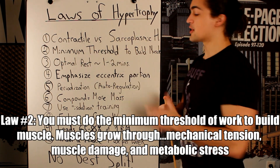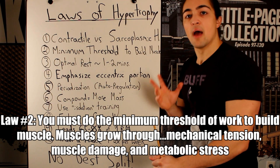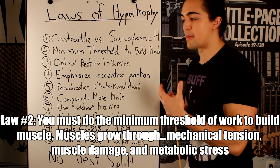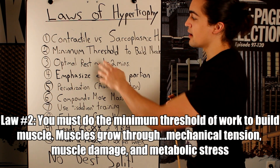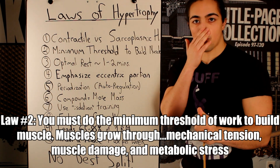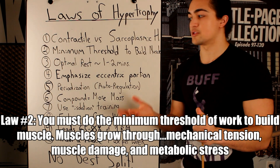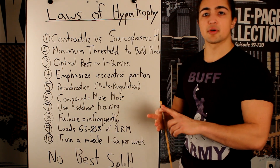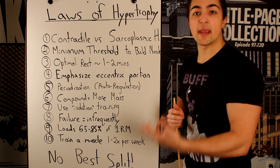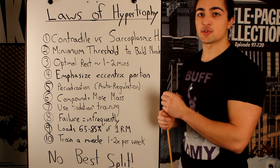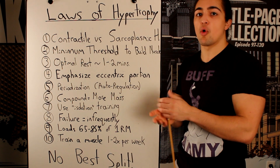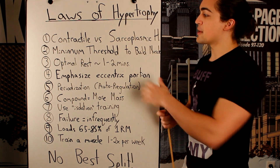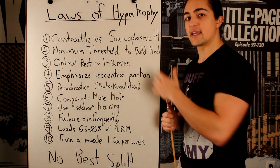Law two: minimum threshold to build muscle. In order to build muscle, you have to incur a certain metabolic effect, metabolic damage, muscular damage, or mechanical tension. In every single workout, you have to induce a training response, which is why progressive overload is very important — more reps, more time under tension, more total weight lifted. You have to hit that minimum threshold for your body. There's no golden rule of, say, 20 sets to grow muscle — it depends on you. Seek getting better.